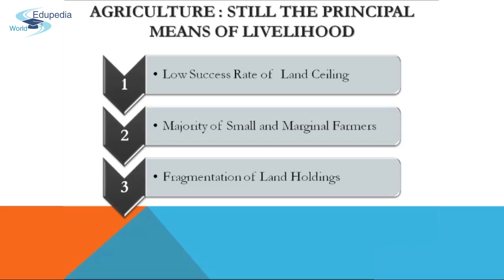The majority of small and marginal farmers form the largest section of the rural poor in India. The land they own is generally less fertile and dependent on rains. Their survival depends on subsistence crops like wheat and sometimes on livestock. Subsistence agriculture is self-sufficiency farming in which farmers focus on growing enough food to feed themselves and their families.